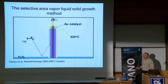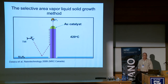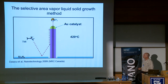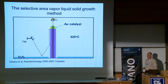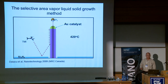We are the second group to use this method. It was invented by a group at the National Research Council in Canada, who have been using it only for growing indium phosphide. We are also just growing indium phosphide now, but this week or next week will be gallium arsenide and indium arsenide. We hope to use it for the entire range of material systems we can grow.